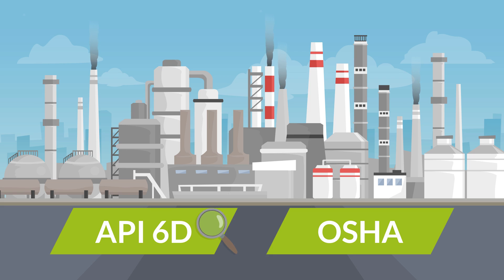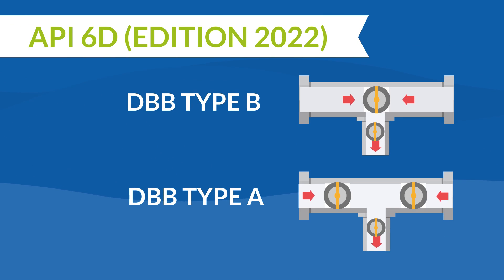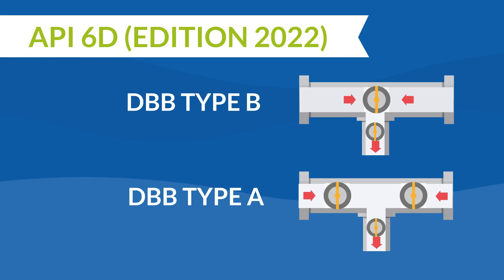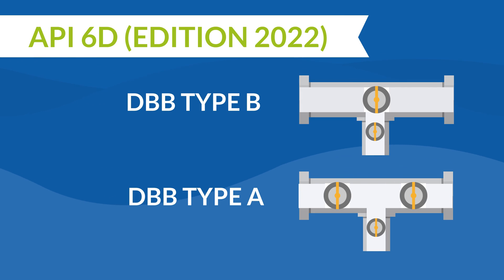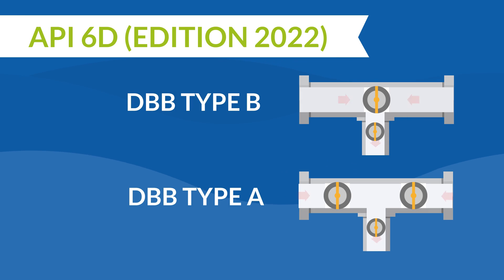According to API 6D edition 2022, a double block and bleed valve system is defined as a valve with two or more sealing elements that in the closed position provides a seal against pressure from both ends of the valve, with a means of bleeding the cavity between the sealing elements. You should be aware that such a DBB valve does not provide positive double isolation when only one side is under pressure.